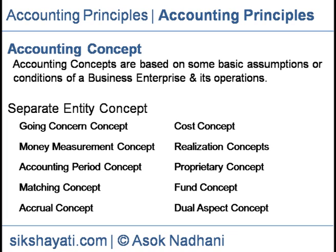Accounting Period Concept: Accounting period is a segmentation of business life for studying the results shown by business in each segment, normally one year. Under this concept, the life of a business is divided into appropriate periods to get the correct financial position of the business related to each such segmented period. The concept helps to segregate and compare the earnings and status for each segment period of the business. So, the accounting statements always refer to a specific date or period.